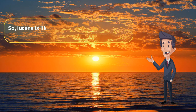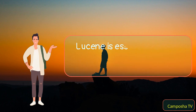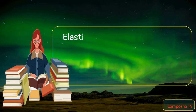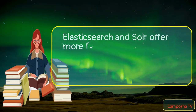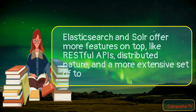So Lucene is like the engine under the hood for Elasticsearch and Solr? Exactly. Lucene is essentially a library that provides the indexing and search technology. Elasticsearch and Solr offer more features on top, like RESTful APIs, distributed nature, and a more extensive set of tools and plugins.